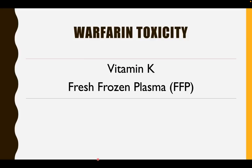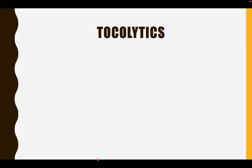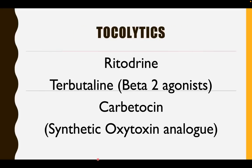Don't forget: when you give warfarin, it acts on the extrinsic pathway and you have to monitor the pro-time. What about the tocolytics used in obstetrics? We have ritodrine and beta-2 agonists such as terbutaline. Carbetocin is also used as a tocolytic — this is actually a synthetic oxytocin analog which is safer than oxytocin and has fewer hypertensive episodes as a side effect.